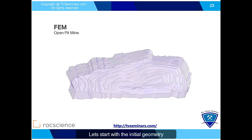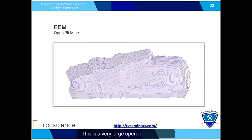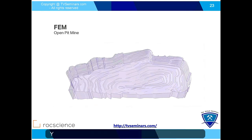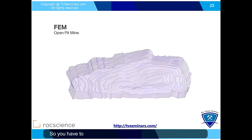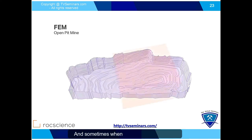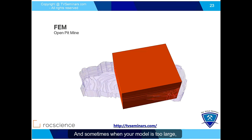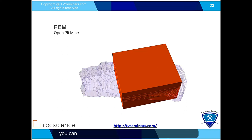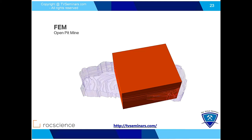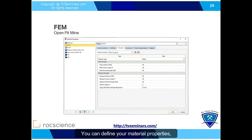Let's start with the initial geometry. This is a very large open pit mine in Australia. You can see that the initial model doesn't have any layers, so you add different surfaces to create your 3D geometry. Sometimes when your model is too large or you are interested in just a specific region of the model, you can focus on that area.